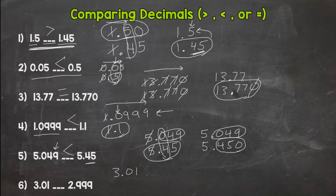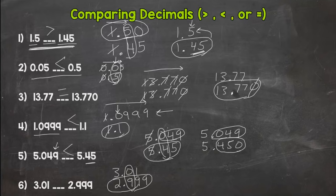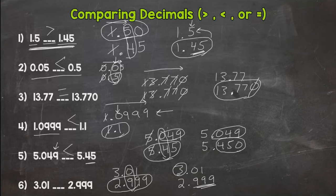The last one is another common mistake. Some might say this one has a lot of nines and a nine in the tenths is greater than a zero, so it must be larger — but always check your whole numbers first. This one has a three in the whole number place. Three wholes is automatically greater than two wholes, so three and one hundredth is greater than two and nine hundred ninety-nine thousandths. Go left to right.